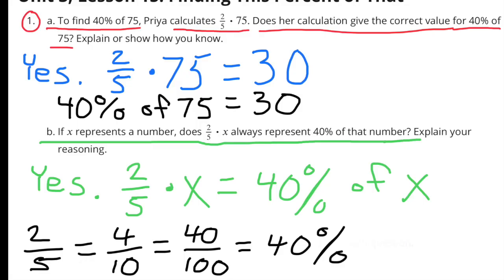Part B. If X represents a number, does 2 fifths times X always represent 40% of that number? Explain your reasoning. Yes. 2 fifths times X equals 40% of X. 2 fifths is the same thing as 4 tenths, which equals 40 hundredths, which is the same as 40%. So 2 fifths times X is 40% of X, just like 4 tenths times X would be 40% of X, or 40 hundredths times X would equal 40% of X.